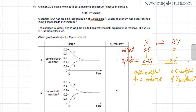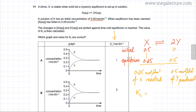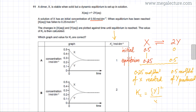Now I need to calculate Kc. The expression for Kc is the concentration of products divided by reactants, which gives [Y]² divided by [X]¹ — we square Y because its coefficient is 2. Substituting values: 0.5² divided by 0.25 gives 0.25 divided by 0.25, so the value of Kc is equal to 1.